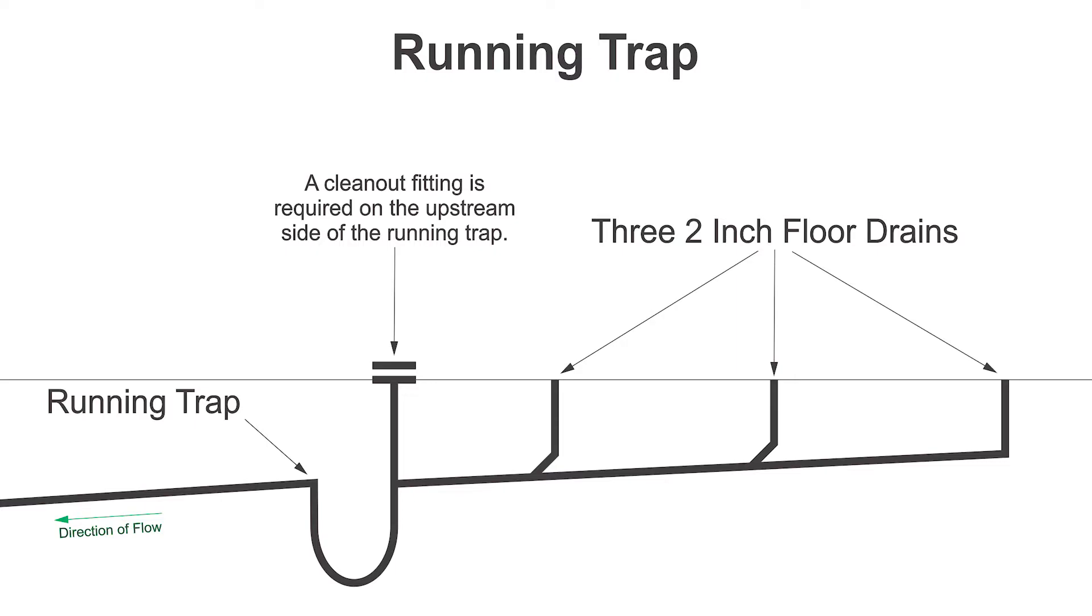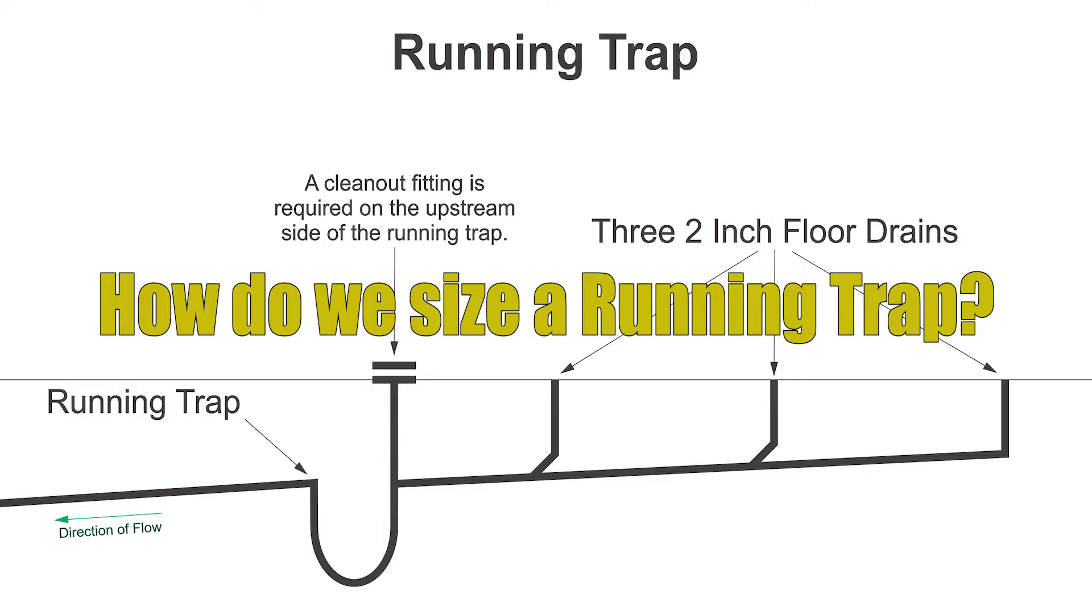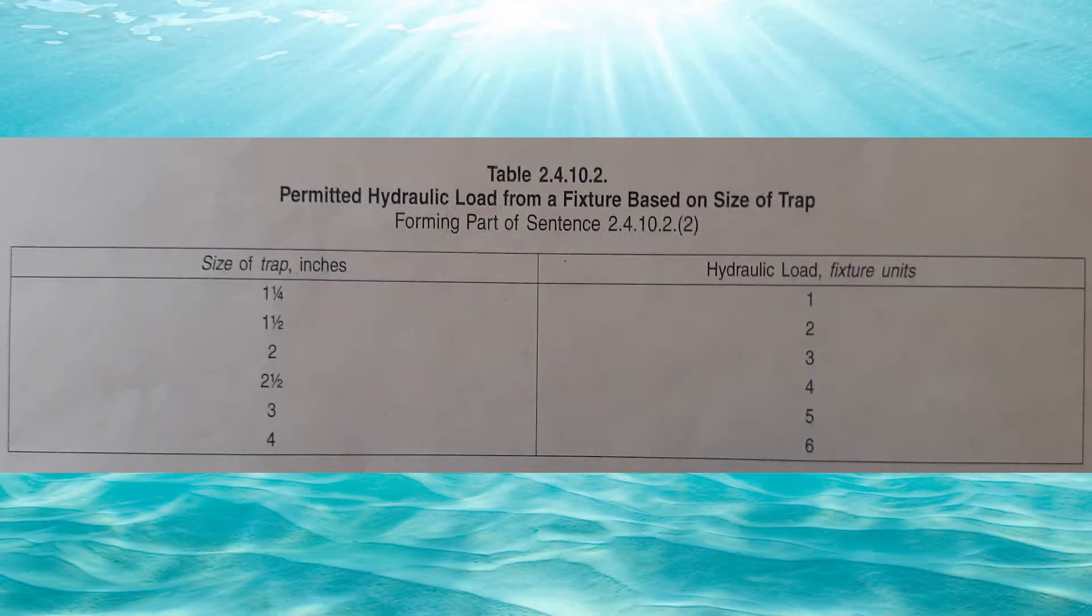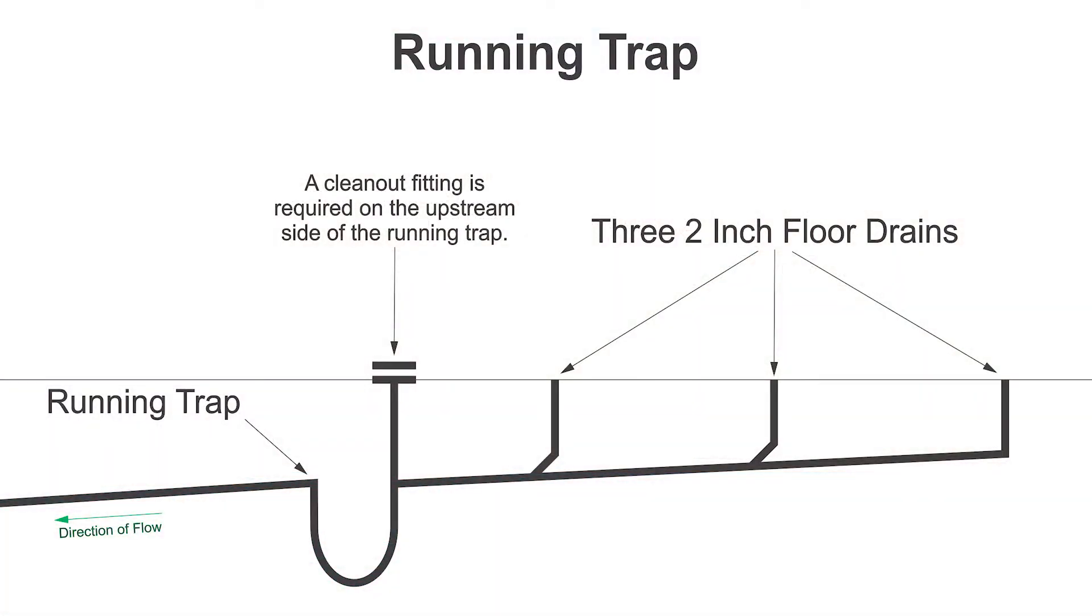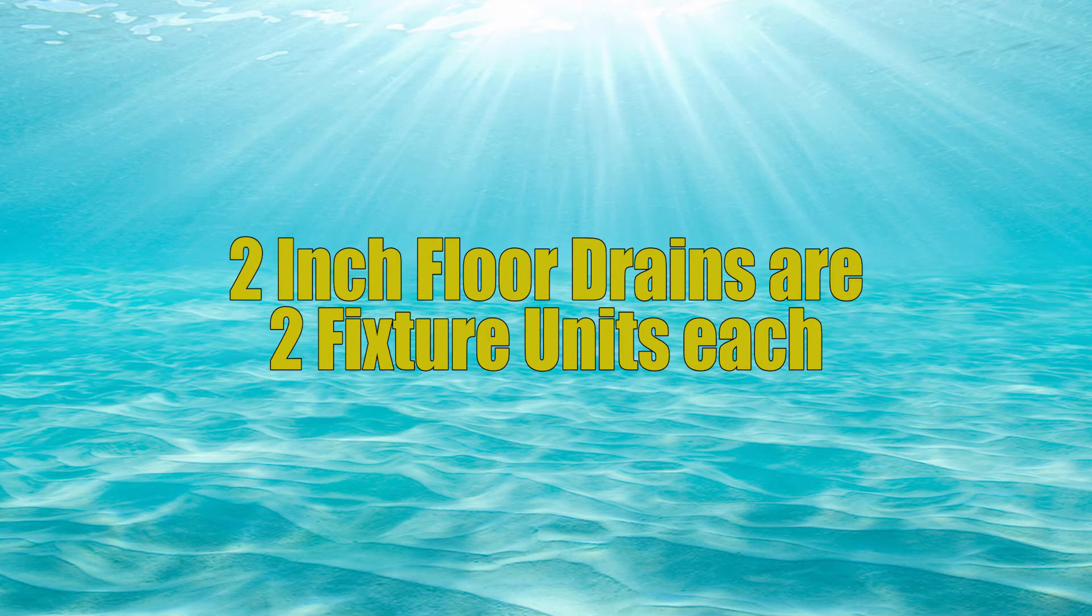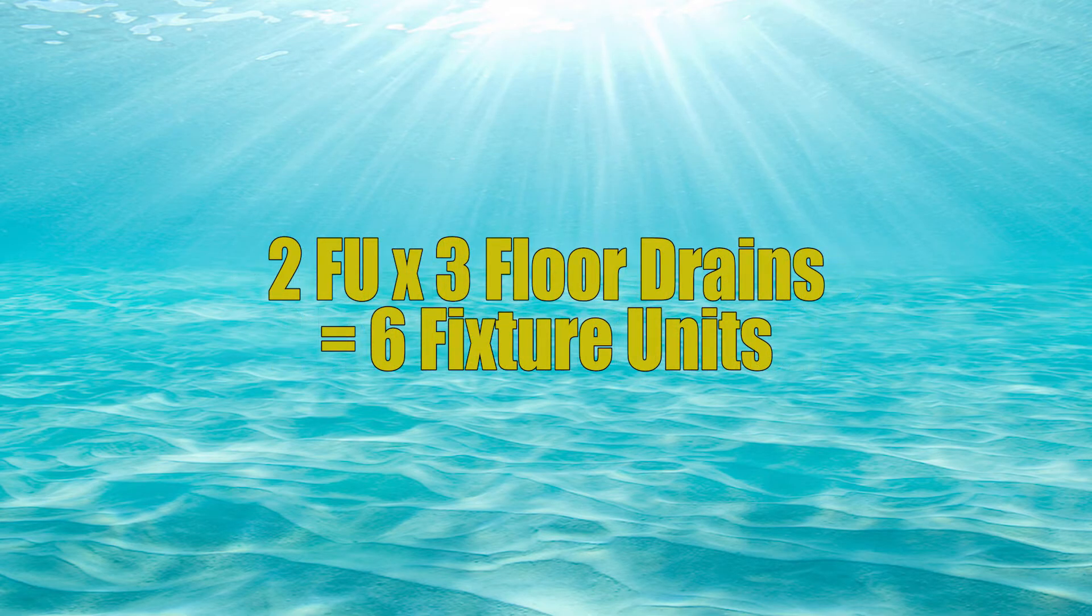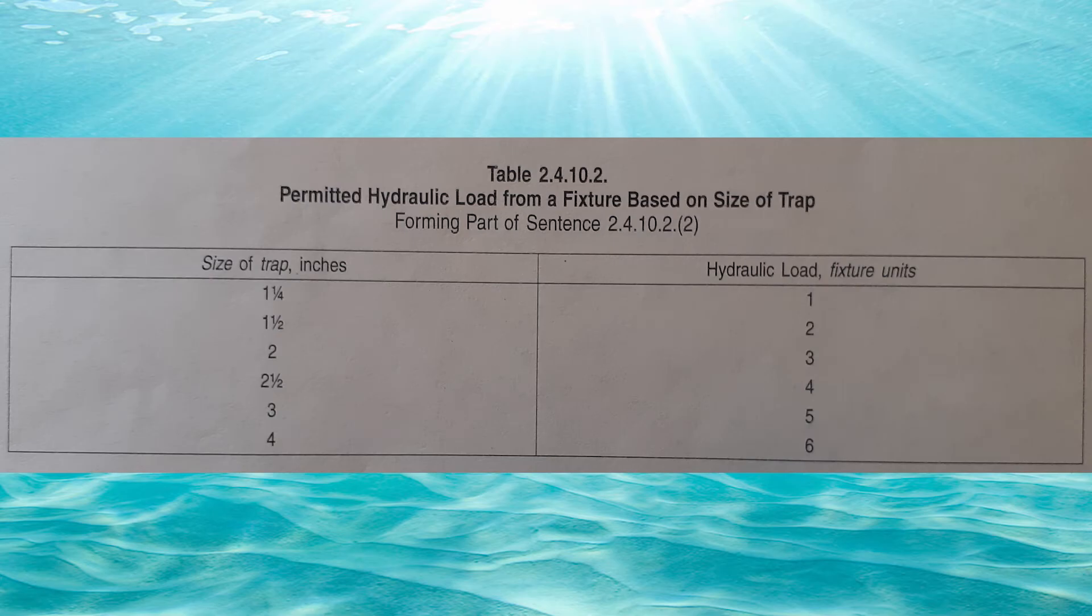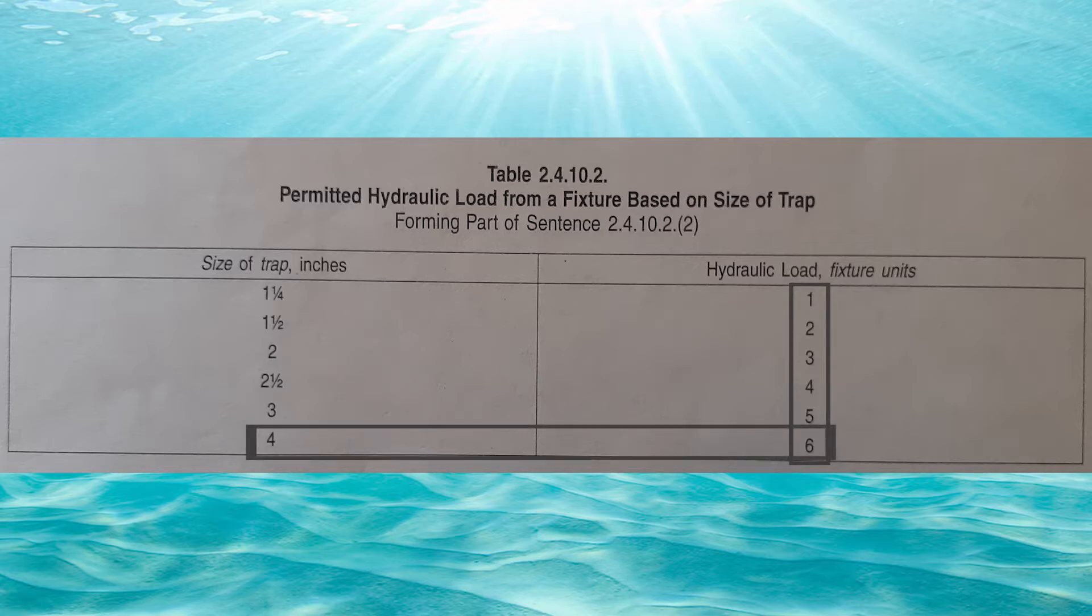Now what the code is not clear on is how to size this. How do we size a running trap? If we look at table 24102, permitted hydraulic load from a fixture based on size of trap, we should be able to figure this out. With my example I have three two-inch floor drains. If I look at table 2493, it will tell me that a two-inch floor drain is two fixture units each. Two times three is six fixture units. I look back at table 24102, look down the right hand column, it says hydraulic load of six. If I go across to the left, I need a four-inch trap. And that's how I size it.